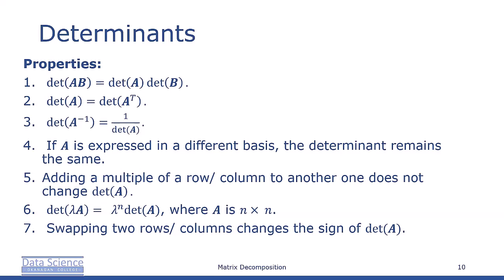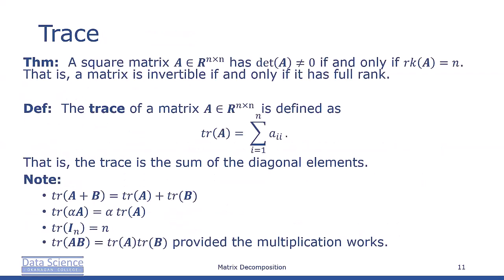Because of these properties, we can use Gaussian elimination to compute det(A) by bringing A into row echelon form. We can stop when A is in triangular form, where elements below the diagonal are zero. Recall that the determinant of a triangular matrix is the product of its diagonal elements. A square matrix A has det(A) ≠ 0 if and only if rank(A) = n. That is, a matrix is invertible if and only if it has full rank.